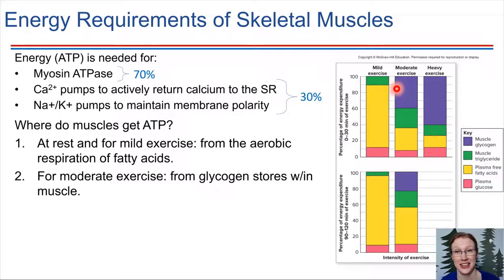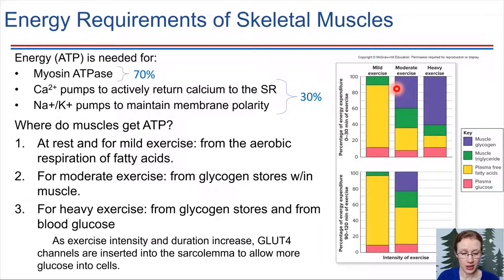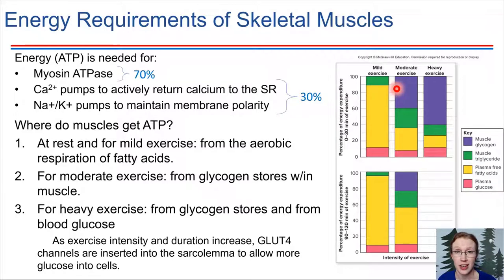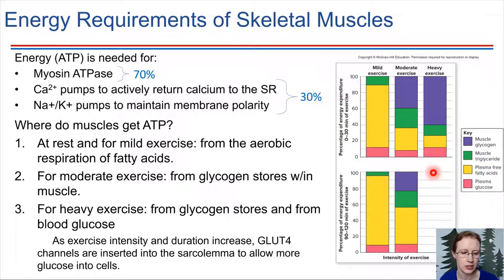ATP synthases that are in the electron transport chain. That's for moderate intensity and also heavy exercise — we use a lot of glycogen stores. The heavier the exercise, the more glucose transport molecules get inserted into the membranes. We talked about how glucose transport carriers are stored in vesicles near the plasma membrane and can be inserted into the plasma membrane when needed. Heavy exercise is one of the things that can facilitate that insertion, helping to bring in even more glucose from the plasma.